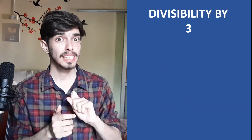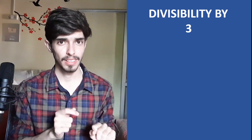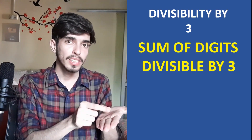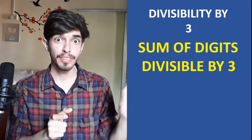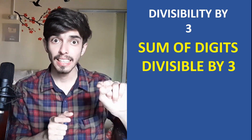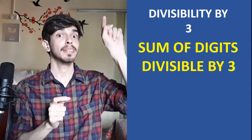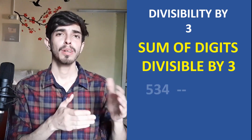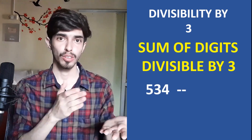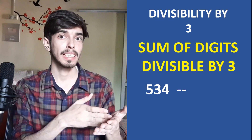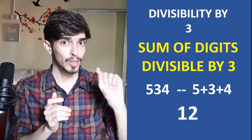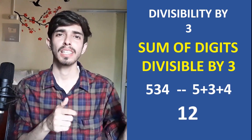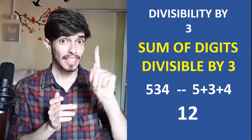The next divisibility test is really interesting: divisibility by 3. If the sum of the digits of a number is divisible by 3, then that number is also divisible by 3. For example, 534: 5 + 3 + 4 = 12, and 12 is divisible by 3, so 534 is also divisible by 3.